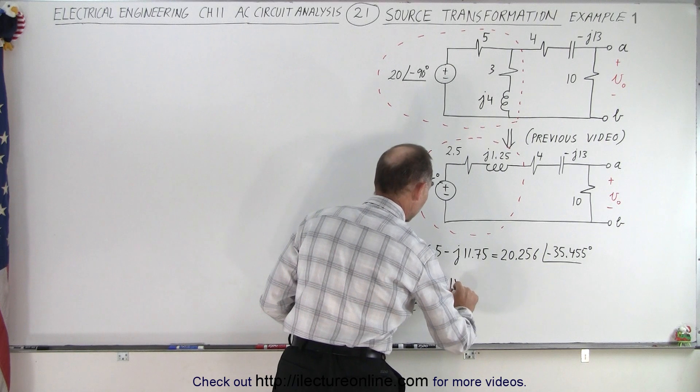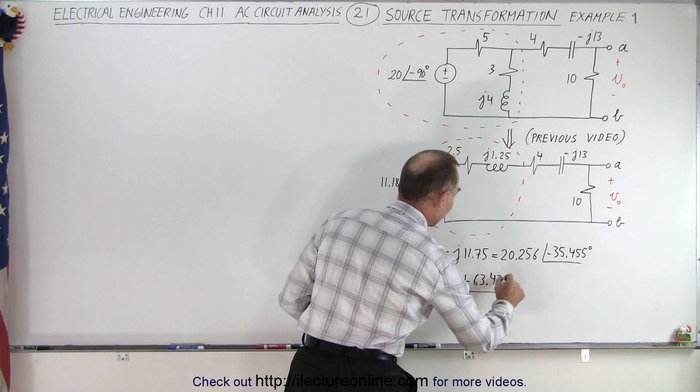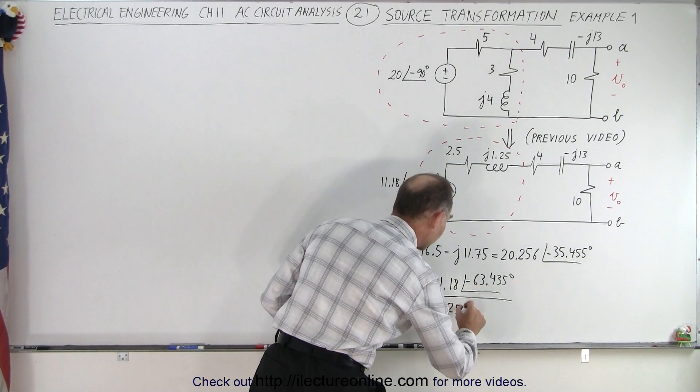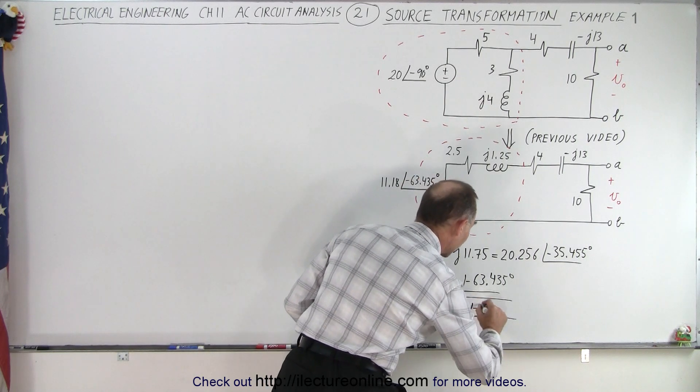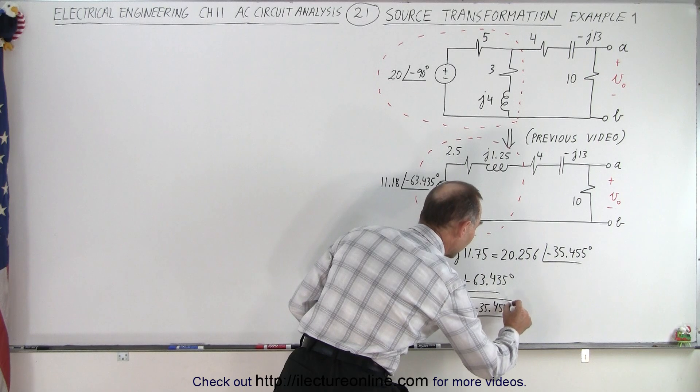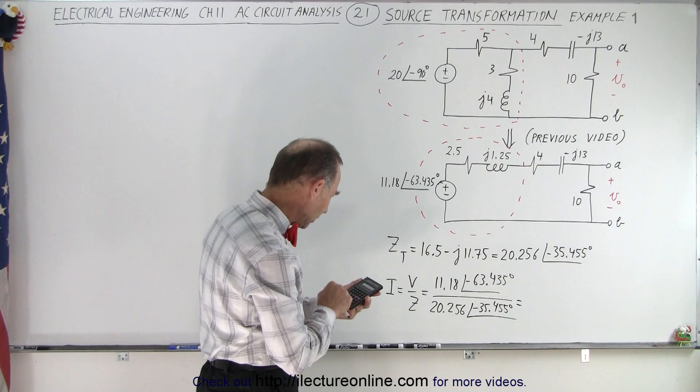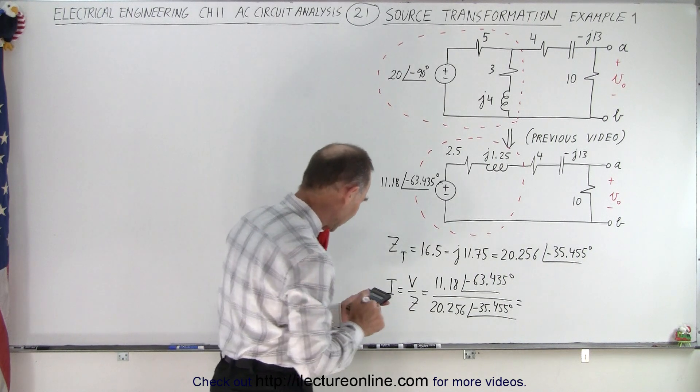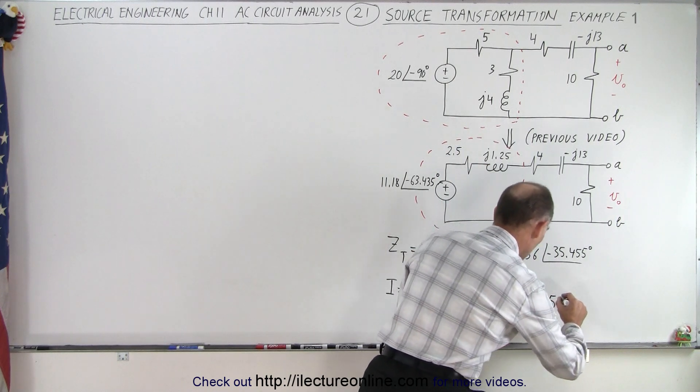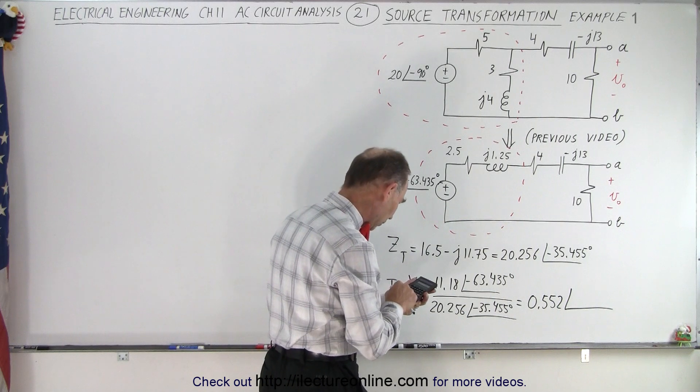we have 11.18 with a phase angle of minus 63.435 degrees, and divide it by the impedance of 20.256 with a phase angle of minus 35.455 degrees. All right, so we have 11.18 divided by 20.256. That gives us 0.552...